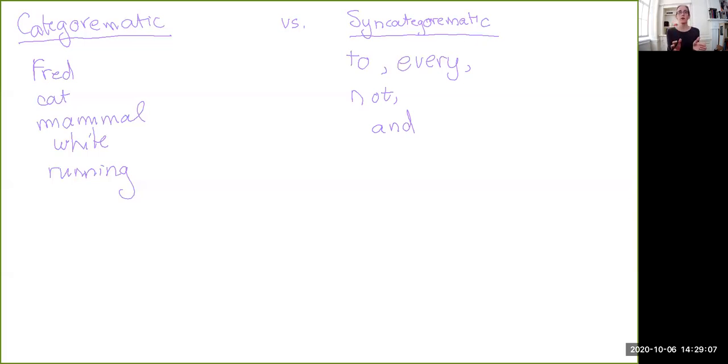The categorematic ones are our focus. These are the sorts of things that we want to be able to say things about in the context of the syllogistic. So with an understanding of what these are, we're also going to introduce a particular type of syncategorematic term that we will use to combine the categorematic ones together.